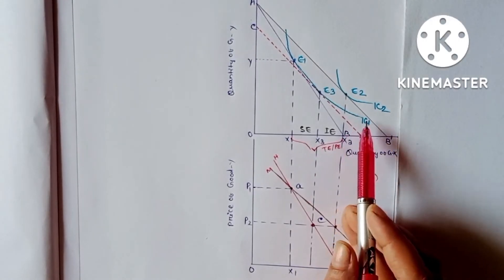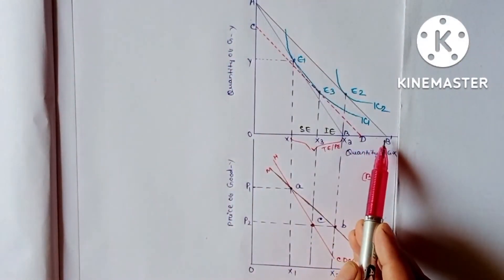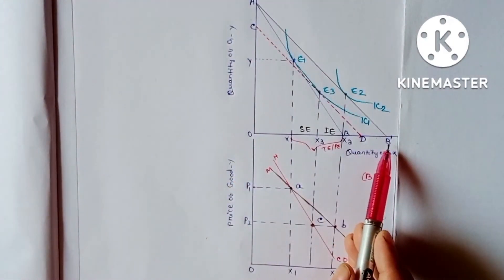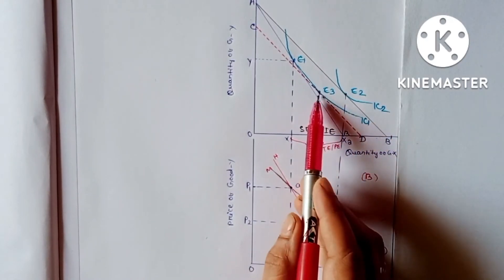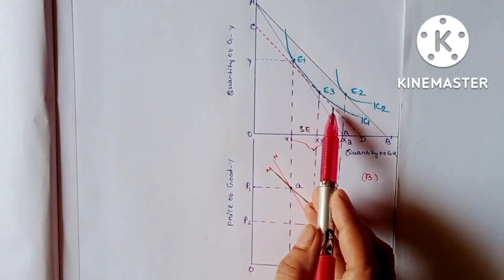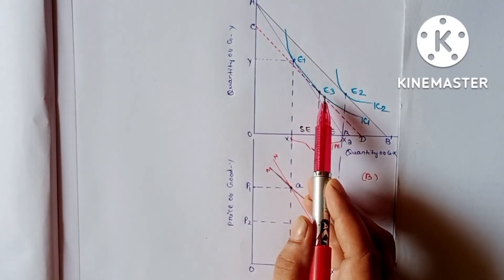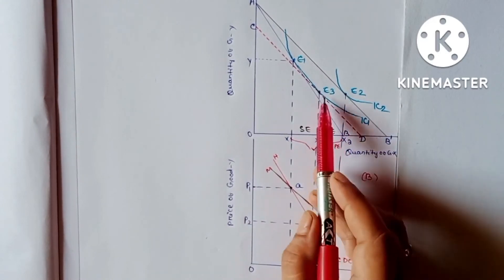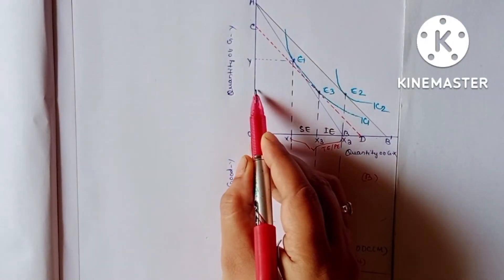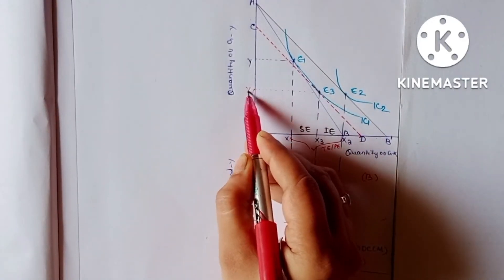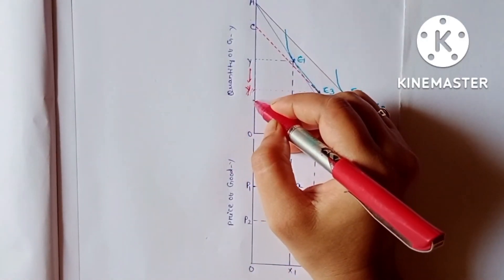With the reduction in money income, the budget line shifts inward. We must ensure the new budget line CD is parallel to the new budget line AB' and is tangent to the old original indifference curve IC1. This tangency occurs at point E3. The consumer now reduces the purchase of Y and purchases more of good X due to the fall in price.